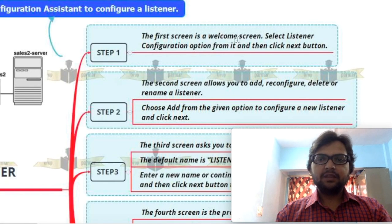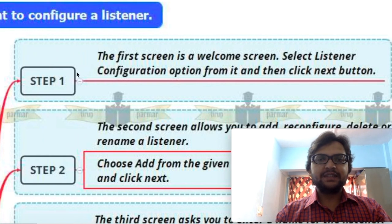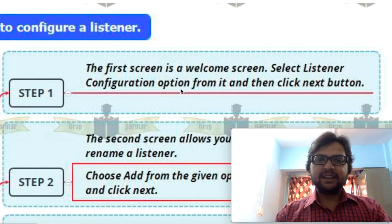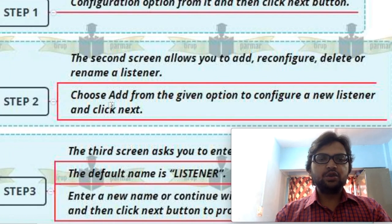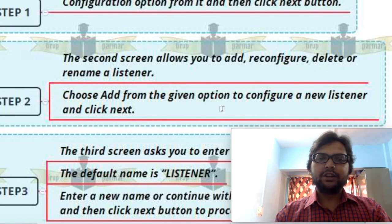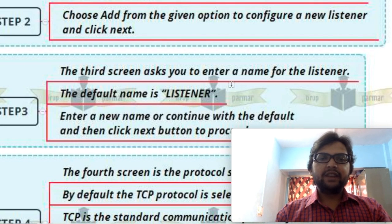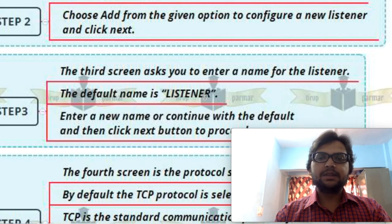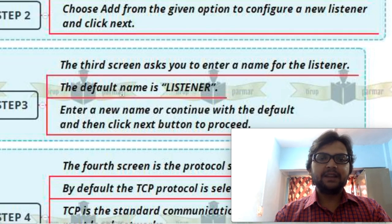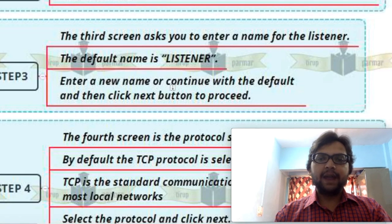In step one, select the configuration screen option. First, select the welcome screen and click next. The second screen allows us to add, configure, delete, or rename the listener — choose Add. Click on Add a New Listener, then click next. The third screen shows the default listener name is Listener. In our practical part we already had a listener named Listener, so Oracle didn't allow a second listener with the same name, and we changed the name to Listener One.